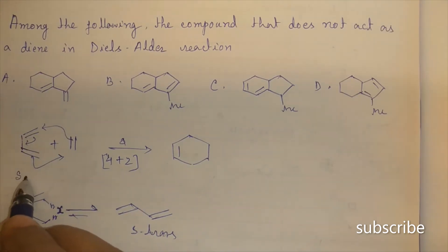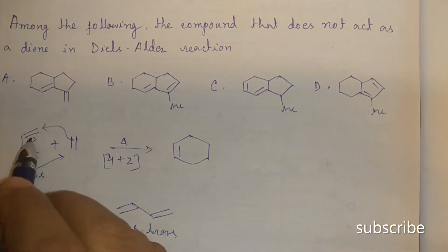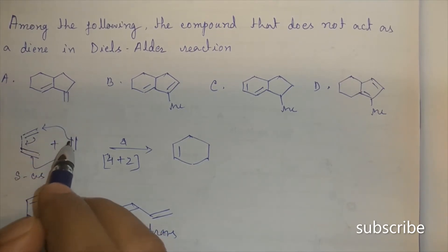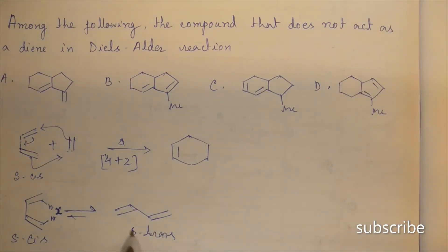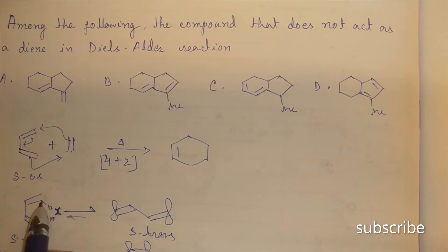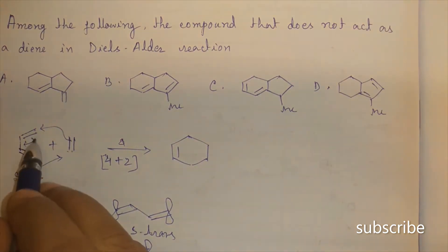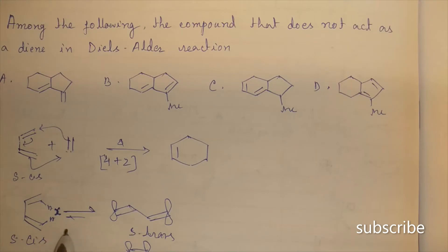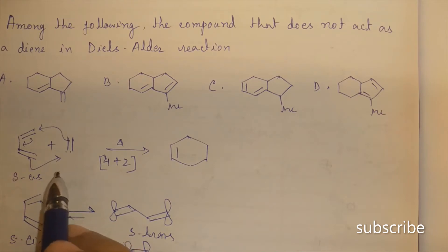For the Diels-Alder reaction, we must have the s-cis configuration, because in s-cis the lobes of the two terminal carbons interact with the lobes of the dienophile carbons. In s-trans, the lobes are far apart and cannot react. There must be a small energy barrier between s-cis and s-trans so that s-trans can easily convert to s-cis to participate in the Diels-Alder reaction.